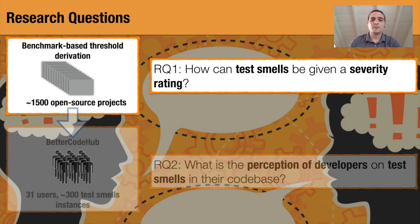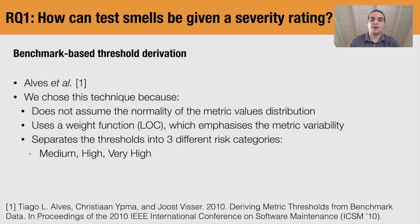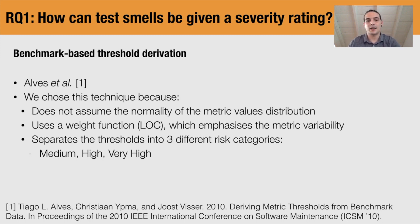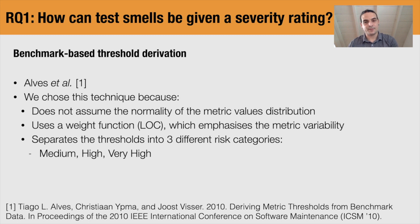Let's start with the first research question. We use the benchmark-based threshold derivation to calculate new thresholds. This is a methodology for deriving software metrics thresholds given a large corpus of projects. In our case, we used 1,500 open-source projects downloaded from GitHub, including Eclipse and Apache projects. We chose this method because our metrics do not follow a normal distribution, and this methodology allows us to weight for lines of code. Furthermore, it gives us three different thresholds to identify medium, high, and very high risk categories. More details on this method can be found in our paper and the original paper that proposes it.